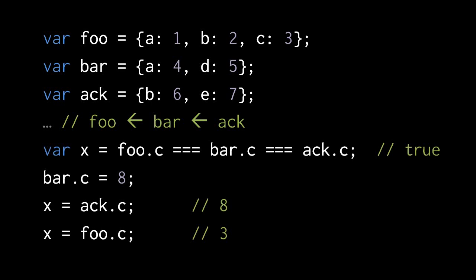Even though only the object in foo has its own property named C, the expression bar.c evaluates to the same property because bar has no property of its own named C, but bar is linked to foo, so JavaScript looks in the object foo and finds property C. Similarly, ac.c resolves to the same property because ac itself has no property named C, we look up the link to the object of bar which has no C, so JavaScript looks up the chain again into the object in foo, which does have property C. So ac.c resolves to the same thing as foo.c.